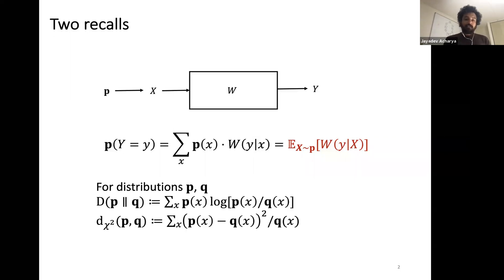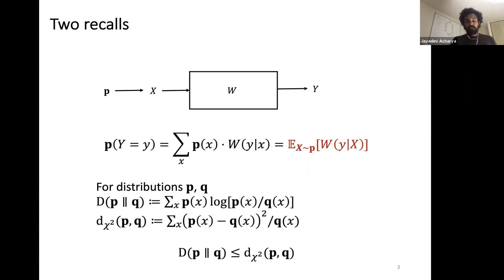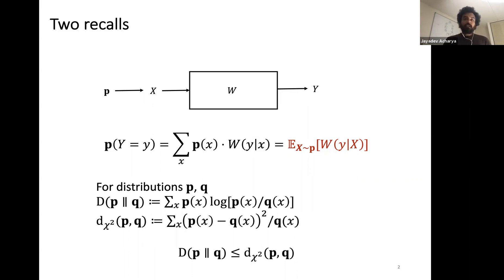For two distributions p and q, D(p||q) denotes their KL divergence and D_chi-square denotes their chi-square distance. It is an exercise to show that the KL divergence between two distributions is at most the chi-square distance between them.